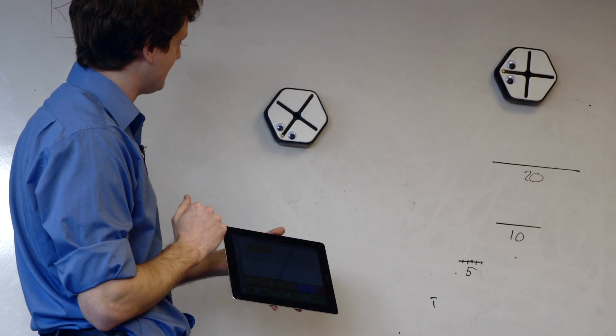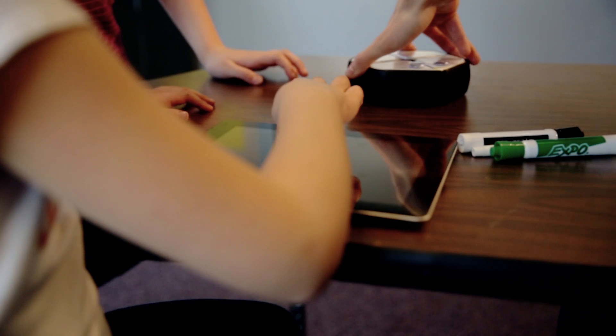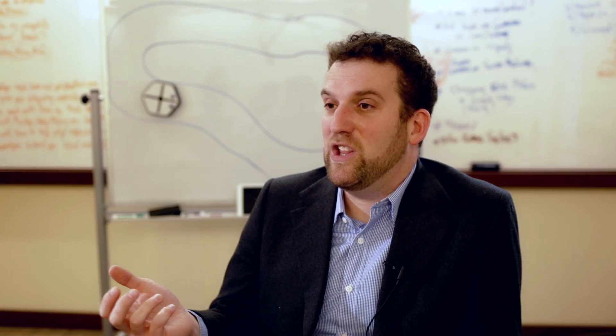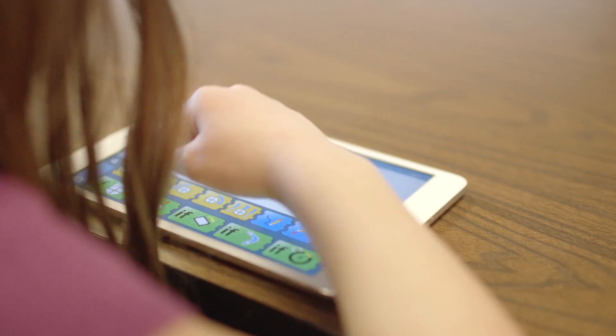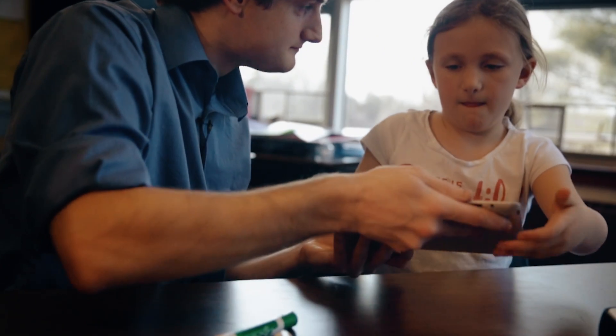We have a vision to fill every classroom in the world with a robot. One of the unique things about Root is that the infrastructure already exists. The whiteboards are already in the classroom. The tablets and apps, that ecosystem is already in most schools.